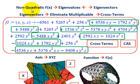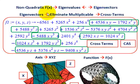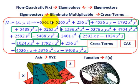What we're going to be going over here is a non-quadratic function. We're going to be calculating the eigenvalues and the eigenvectors. By calculating our eigenvectors and eigenvalues, we're going to be eliminating any multiple cross terms. What we're going to be dealing with here is a sort of complicated formula with x, y, and z variables.